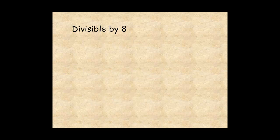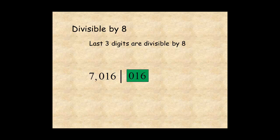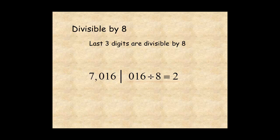A number is divisible by 8 if the number formed by the last three digits is divisible by 8. For example, the number 7,016: the number formed by the last three digits is 16. Since 16 is divisible by 8, 7,016 must be divisible by 8. Sure enough, 7,016 divided by 8 is 877.